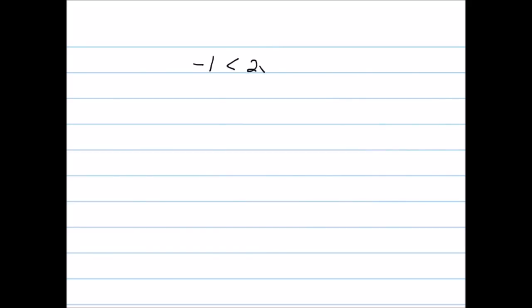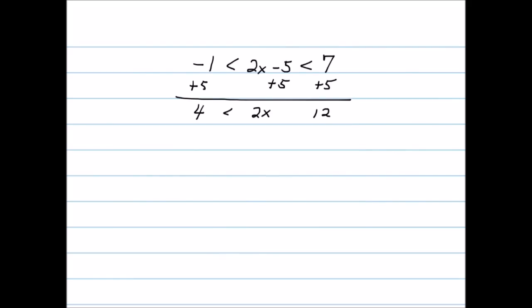Solving a pair of inequalities simultaneously is just as simple. For example, to solve negative 1 less than 2x minus 5 less than 7, we apply operations to every single part. Adding 5 to every part gives 4 in the middle as 2x, and 12 on the right. That operation does not change the direction of the inequality. Then dividing by 2 gives 2 less than x less than 6. The solution set is all x values between 2 and 6, exclusively at the endpoints. In interval notation, this is (2, 6) with open brackets on both ends.